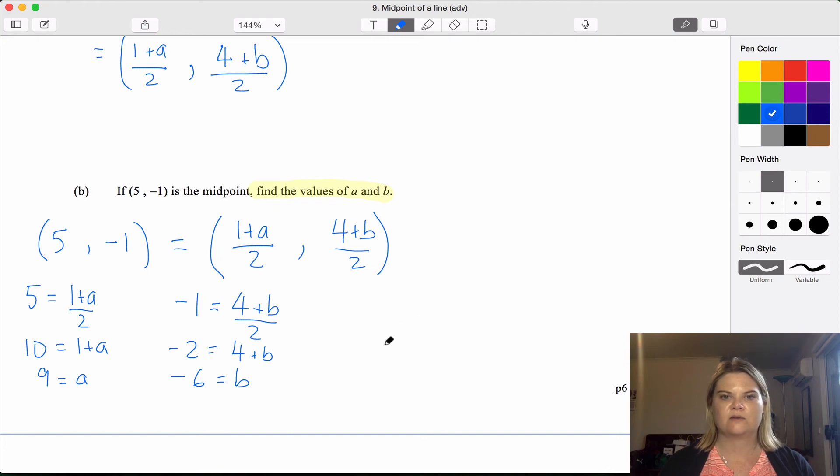And then we can write out our final solution: a equals 9, b equals -6. Now I've written out my solution like this, definitely with a box around it, but I've written it out like this because the question says find the values of a and b.